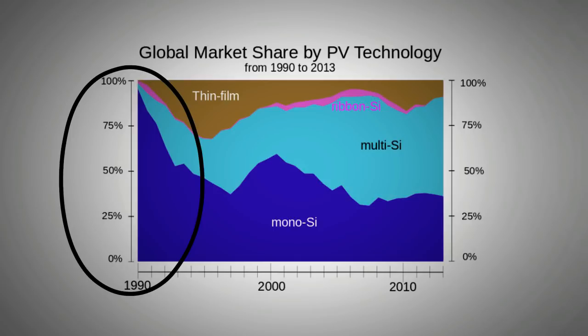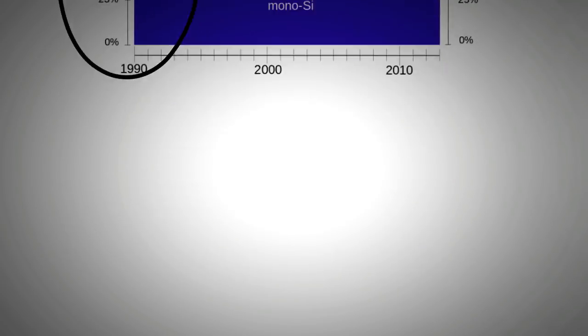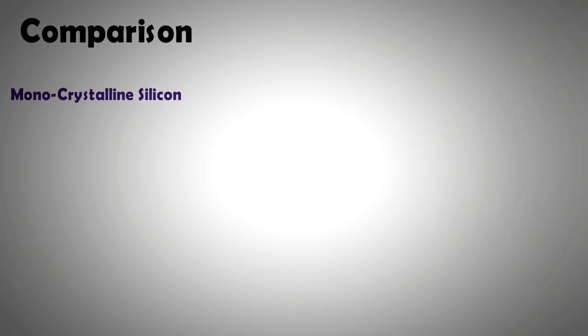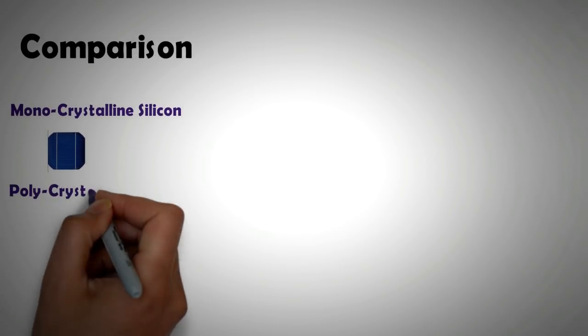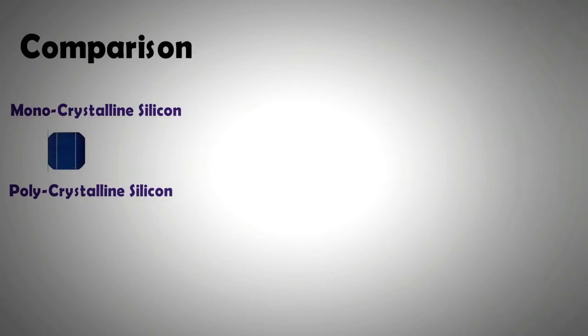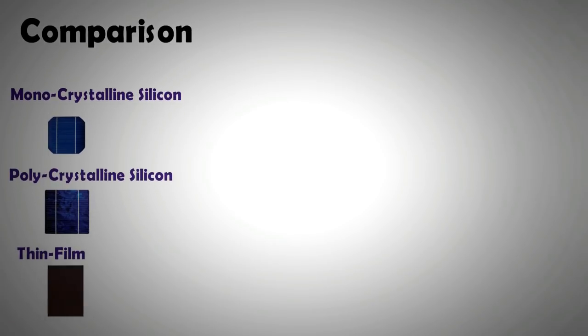Two decades ago in the 1990s, the market was dominated by mono-crystalline panels, which represented nearly 80% of the market share. However, both poly-crystalline and thin film panels since have made huge inroads because of their lower cost. In terms of efficiency, mono-crystalline panels are the most efficient, followed by poly-crystalline and then thin film panels.